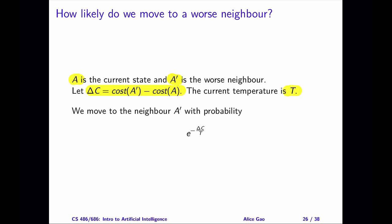Delta C must be positive since a prime has a higher cost than a. T is the current temperature. We will move to a prime with a probability of e to the power of negative delta C divided by T. This function is called the Gibbs distribution or the Boltzmann distribution. It appears in several other fields such as physics. This function is also related to the sigmoid or the logistic function, which you will encounter when learning neural networks in machine learning.